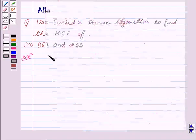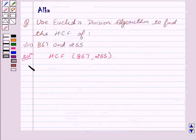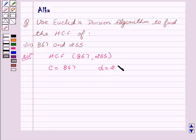So let's start with the solution. We have to find the HCF of 867 and 255. Here we see that C equals 867 and D equals 255.